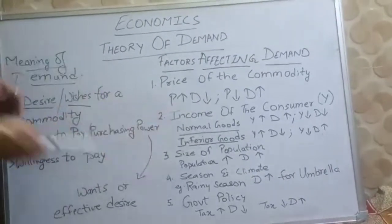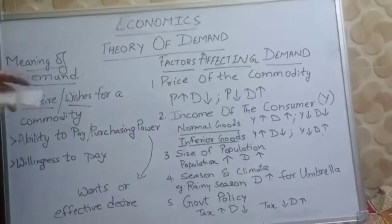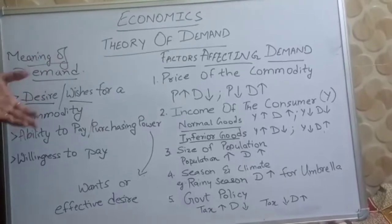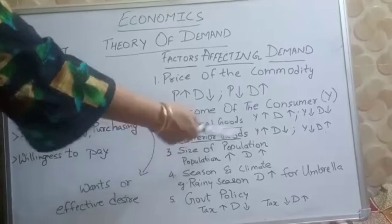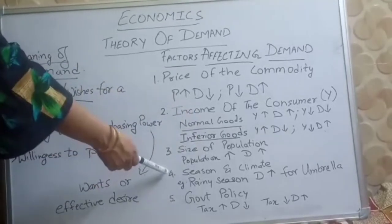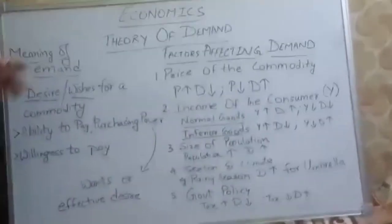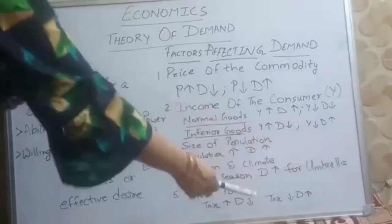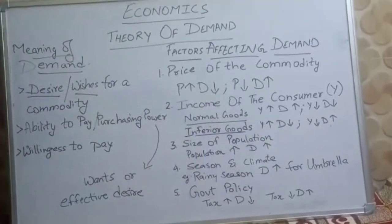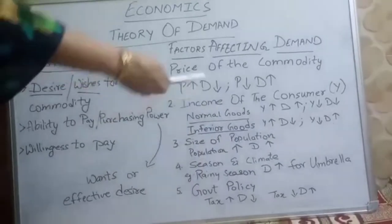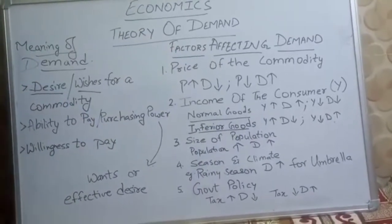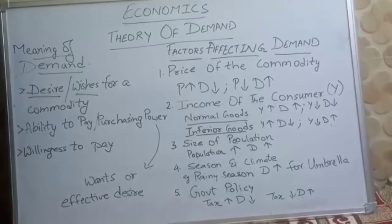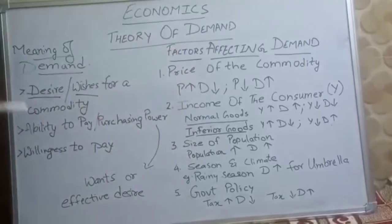The third point is size of population. If population is more, demand will be more — more persons means more demand. If the number of persons is less, demand will be less. The fourth point is season and climate. For example, in a rainy season, demand for umbrellas is more. Season also affects demand.